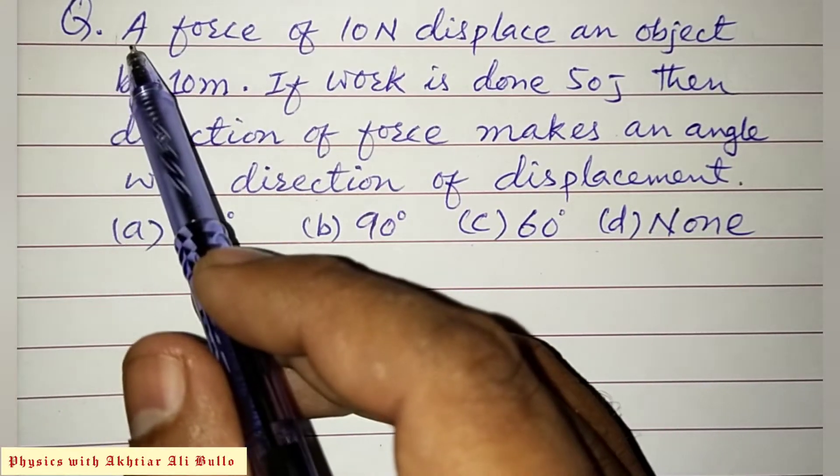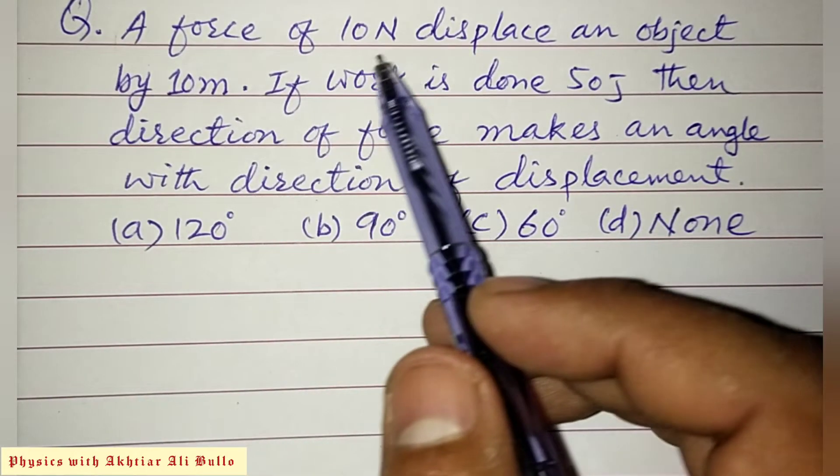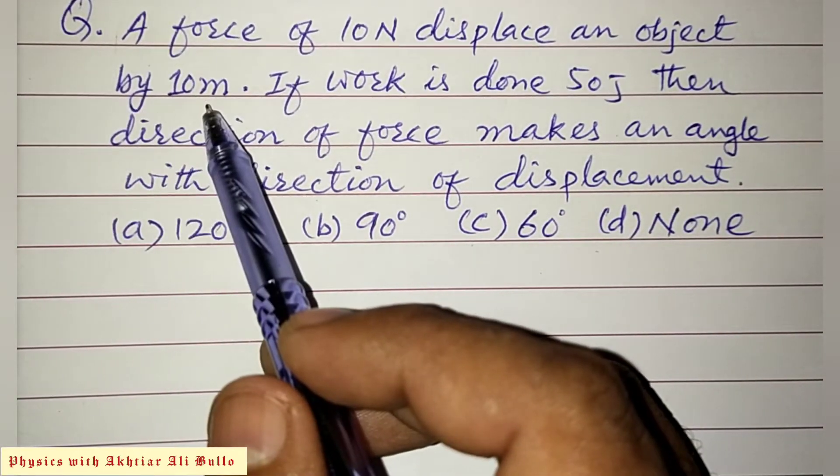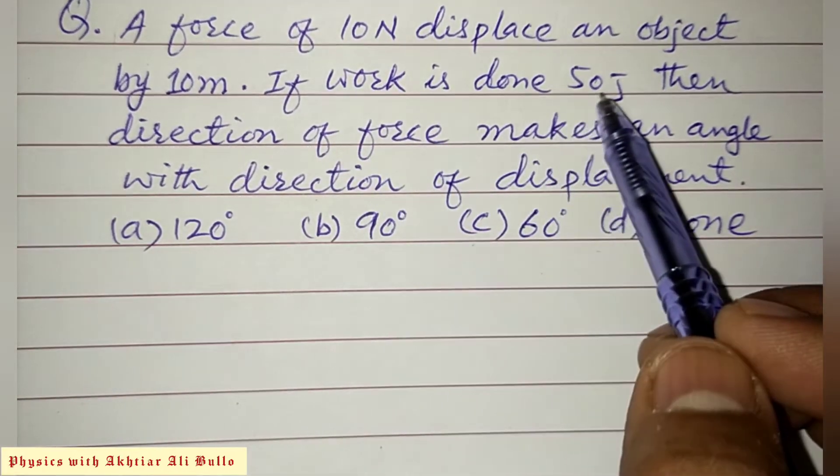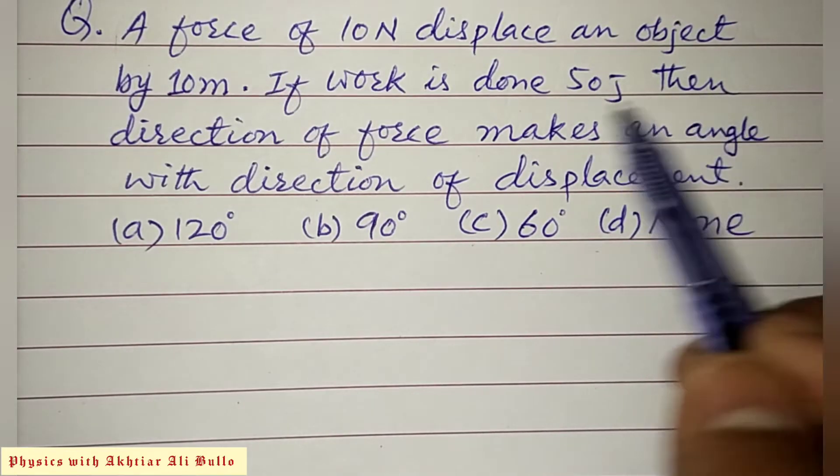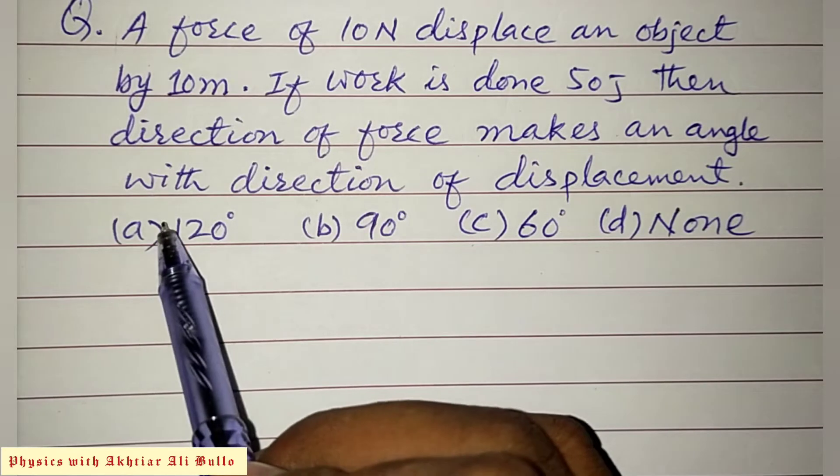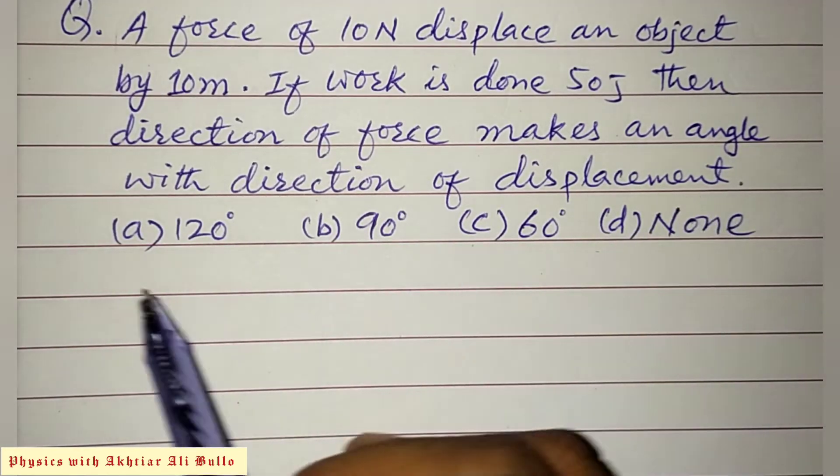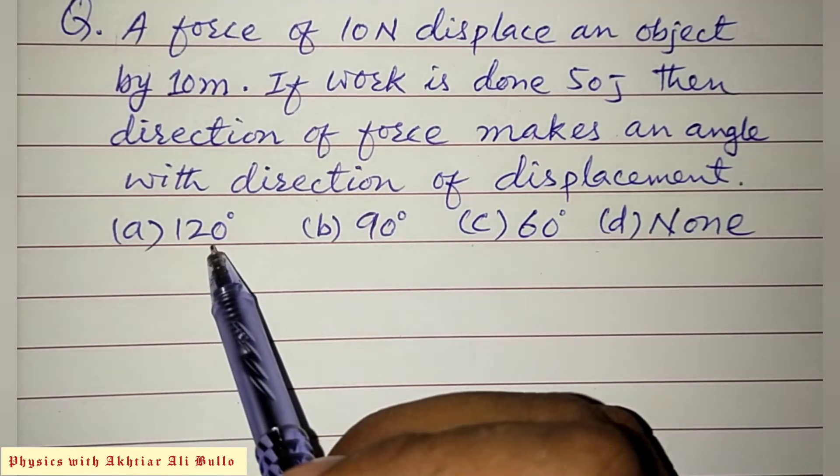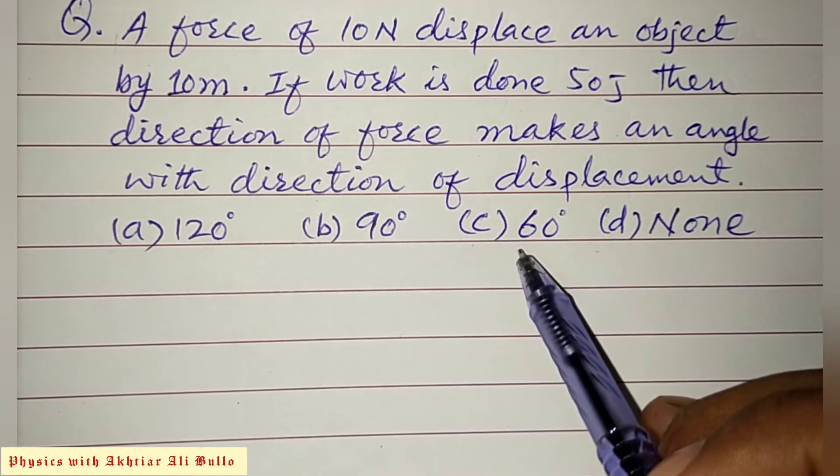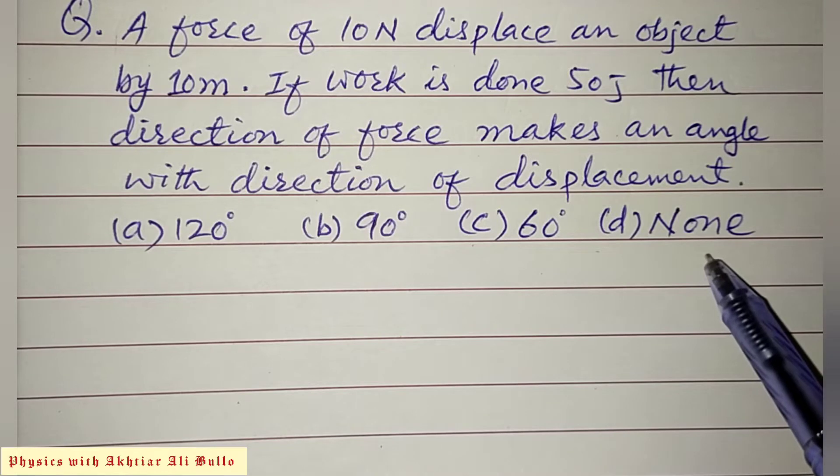The question is: a force of 10 Newton displaces an object by 10 meters. If work done is 50 joules, then the direction of force makes an angle with the direction of displacement. Options: (a) 120 degrees, (b) 90 degrees, (c) 60 degrees, (d) none of these.